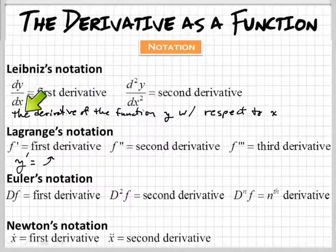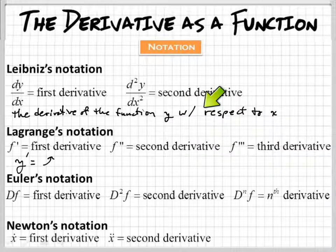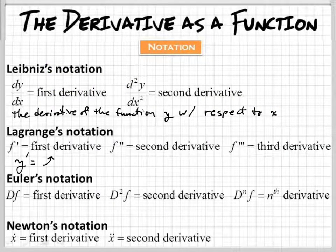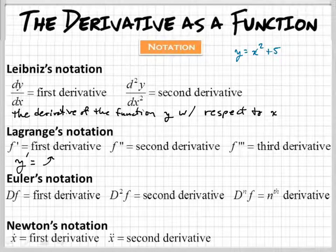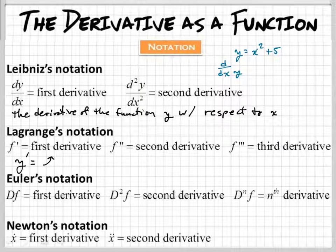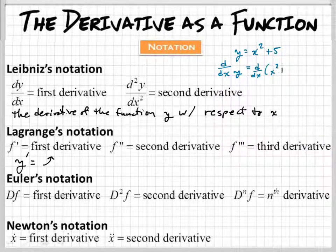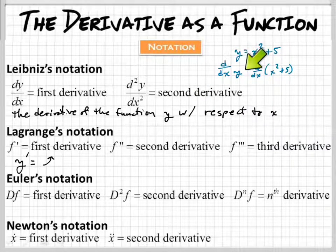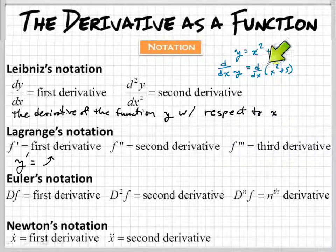So, again, it's the derivative of the function y with respect to x. That's what this is saying right here. So, you could see it like this. Let's say, let's say we have this function y equals x squared plus 5. And you wanted to take the derivative of it.